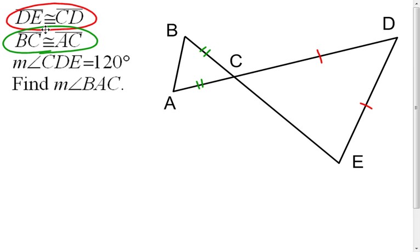And we also know the measure of angle CDE is 120 degrees. That would be this angle up here. And then ultimately we want to find the measure of angle BAC. It should be this angle right here.